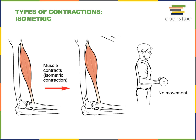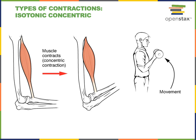In contrast to isometric contraction, isotonic contraction produces movement. Isotonic contraction is when muscle tension remains constant as the muscle length changes. There are two major types: in a concentric isotonic contraction, muscle tension remains constant but the muscle tension is greater than the load, and therefore the muscle shortens as it does work.